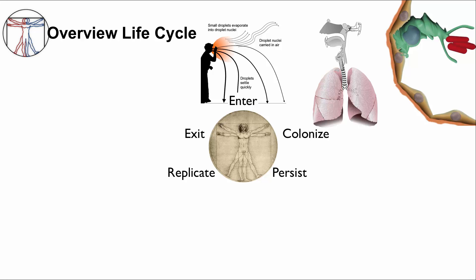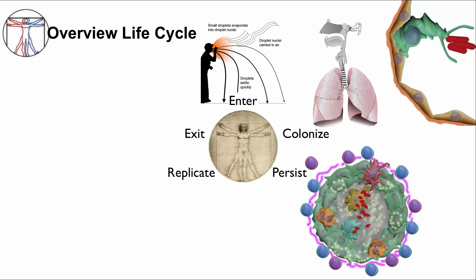MTB is able to survive within the macrophage by evading the innate immune response. The next part of the lifecycle is persist. The hallmark of MTB infection is the granuloma. This is a well-organized, multicellular structure of immune cells recruited to surround a foci of infection. However, granulomas are not just a site for trapping and killing bacteria. They are also a site where MTB can persist and actively modulate the immune response to grow and then exit.